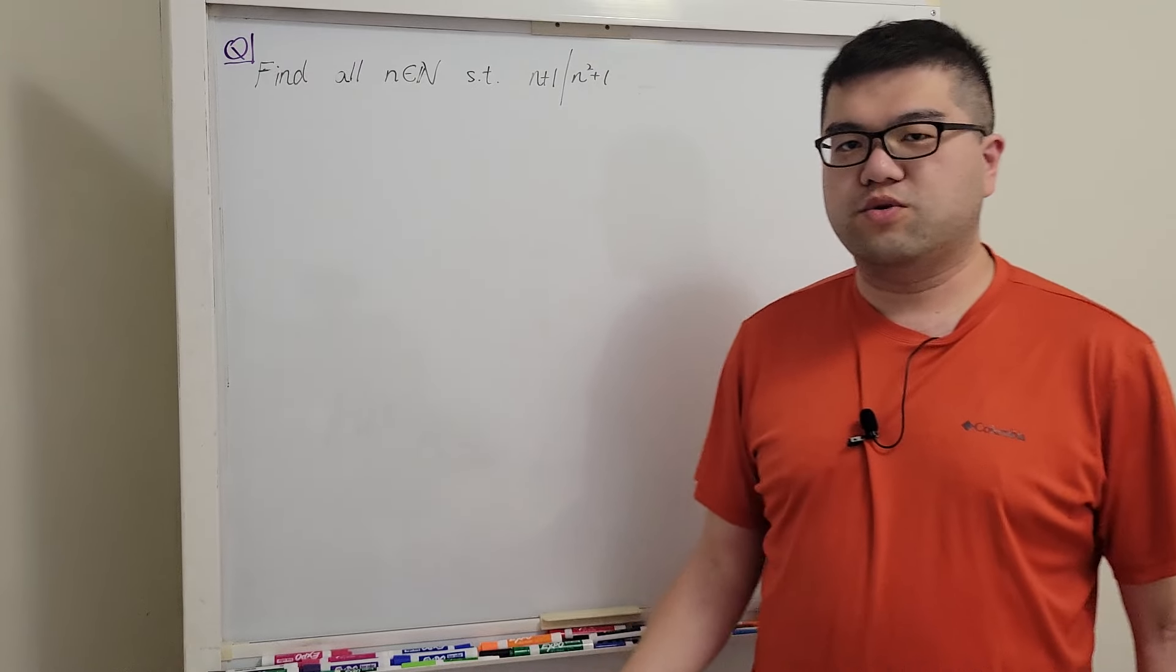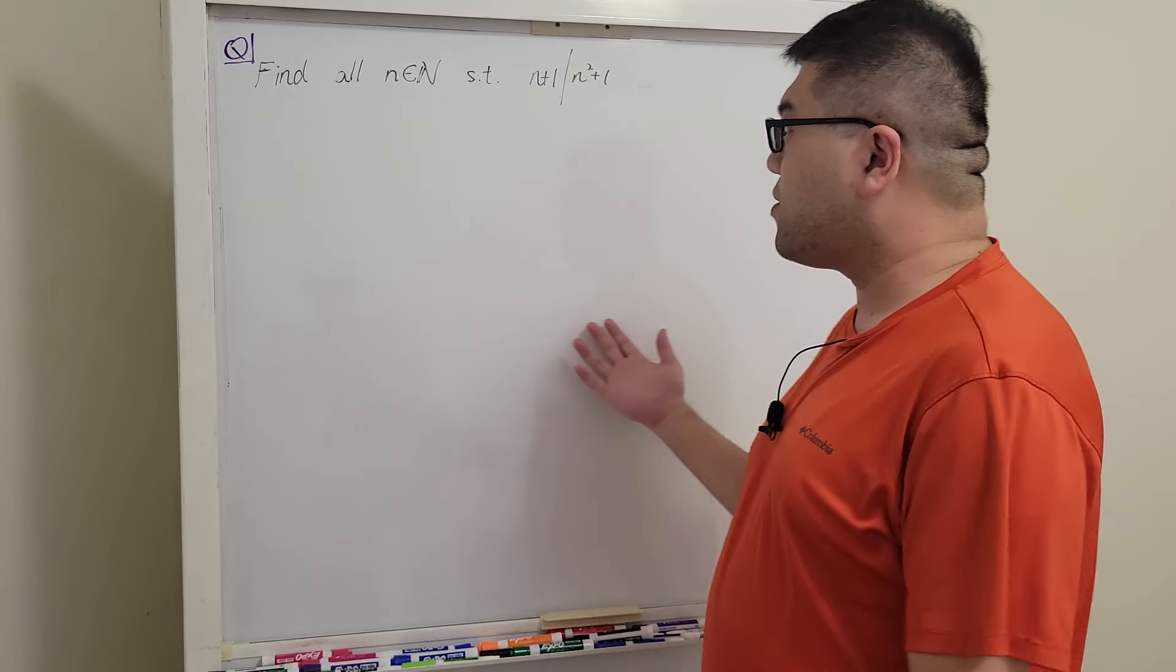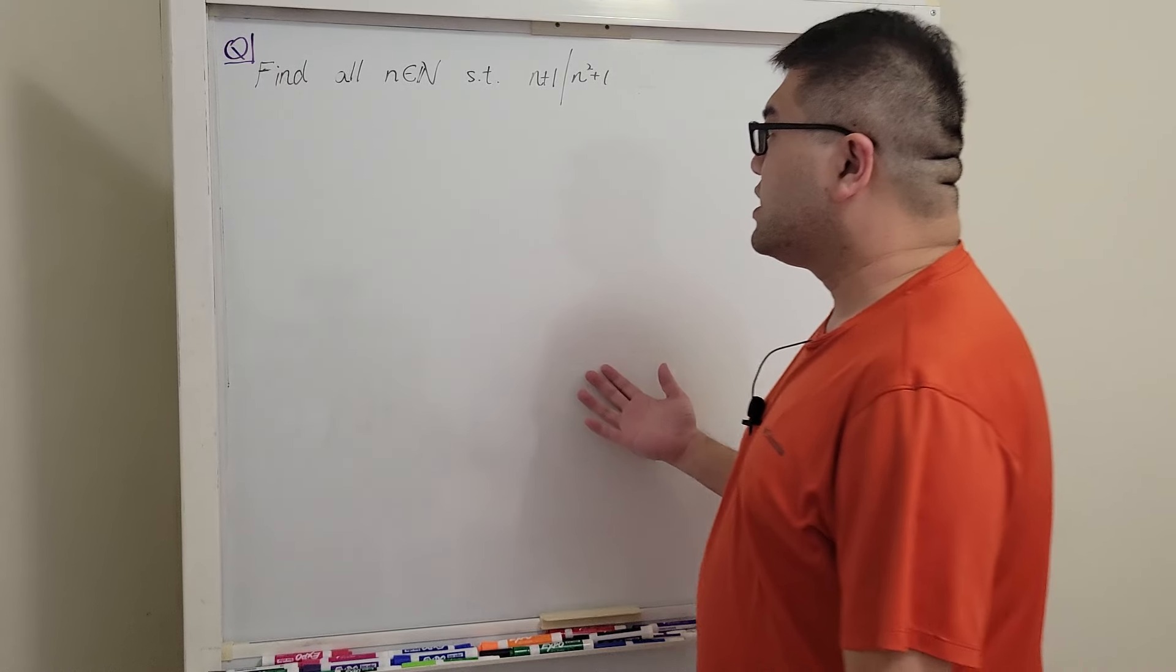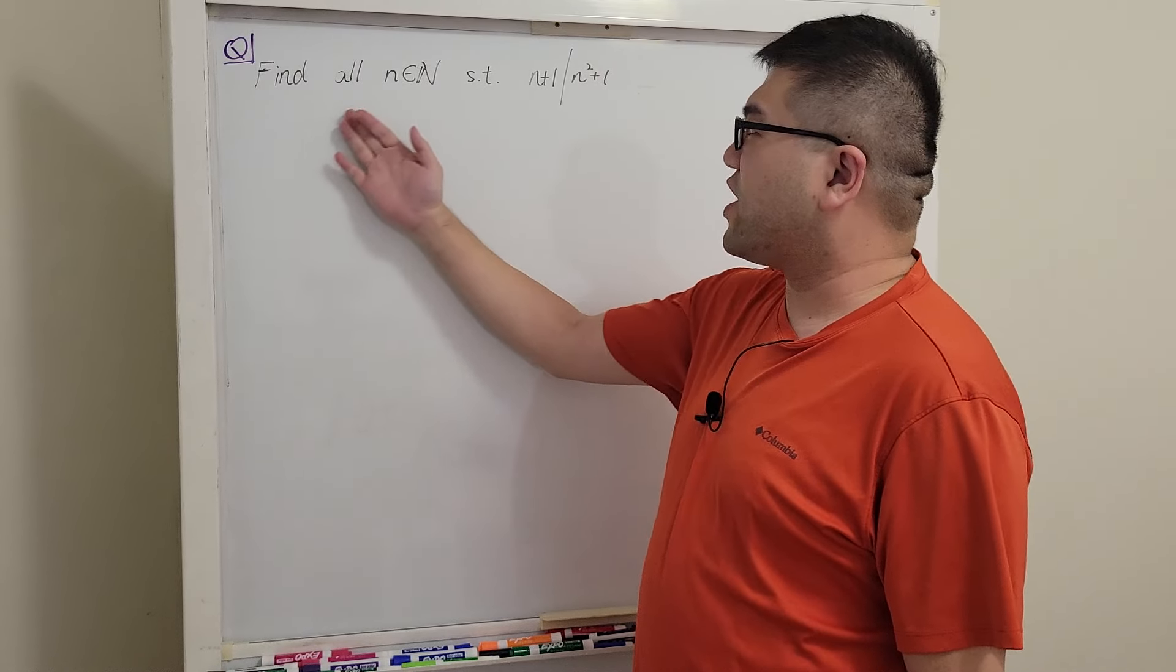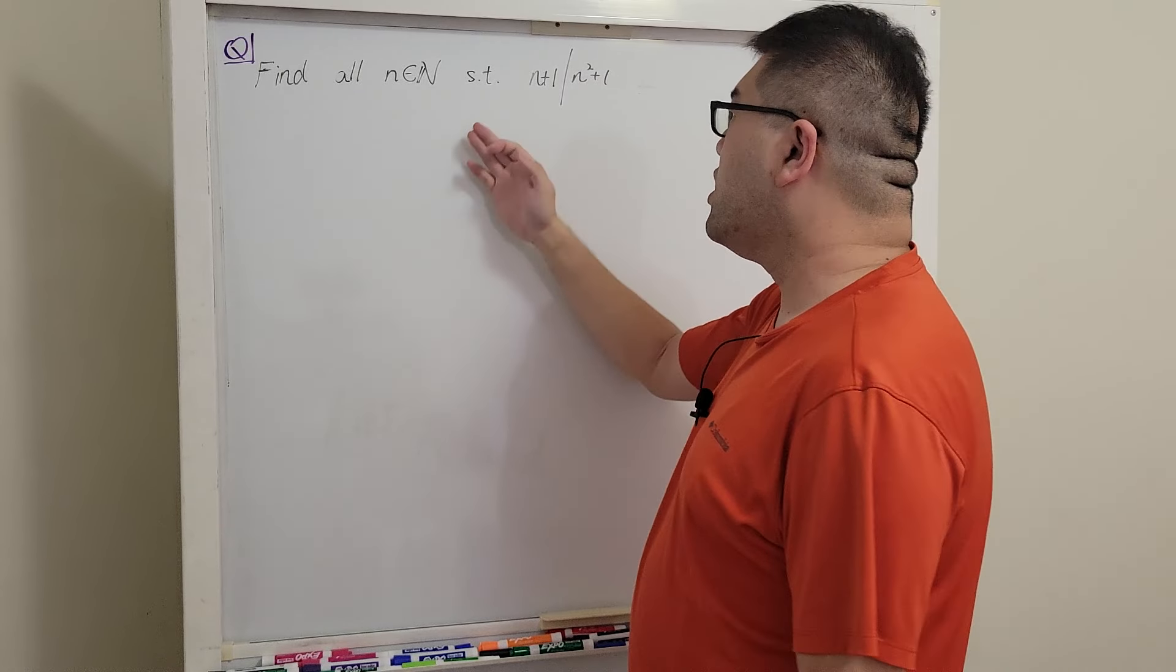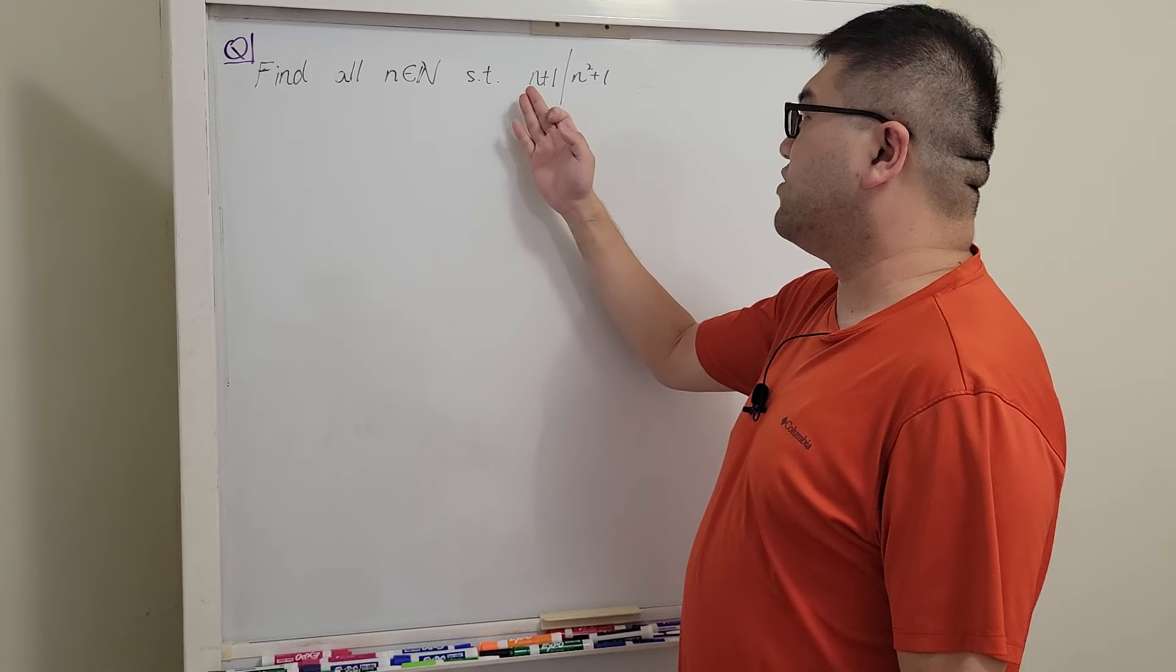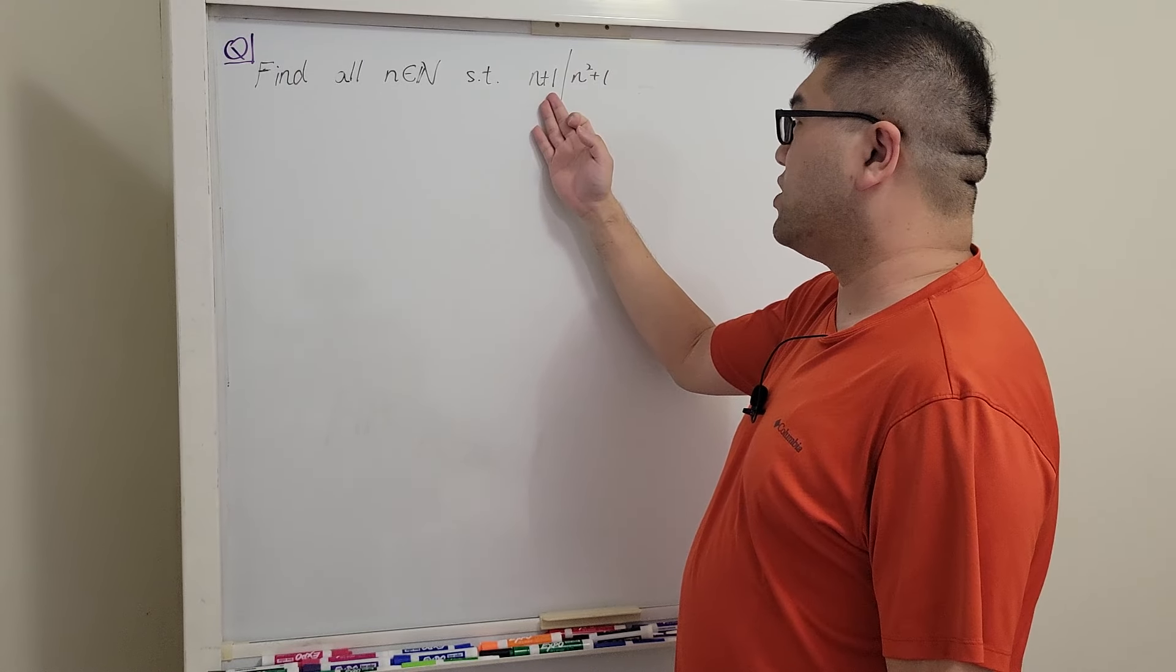What's up everyone, welcome back to the channel. Today we're going to solve a new number theory problem that's fairly easy. The question is simply saying find all natural numbers n, so in this case we exclude n to be equal to 0, such that n squared plus 1 is divisible by n plus 1.